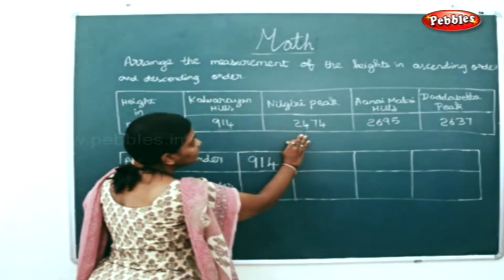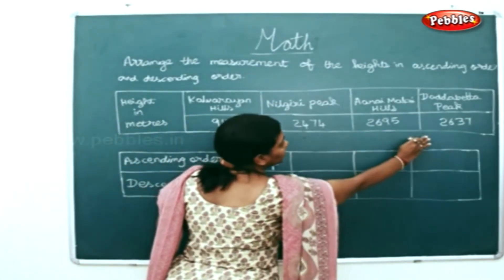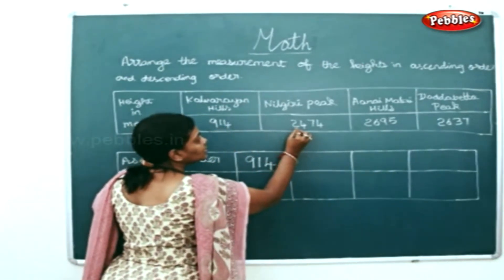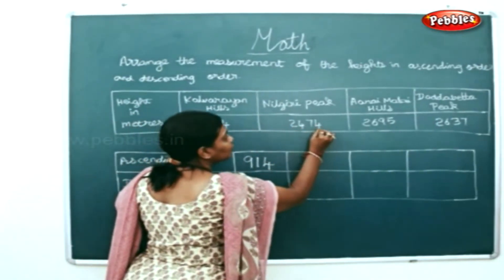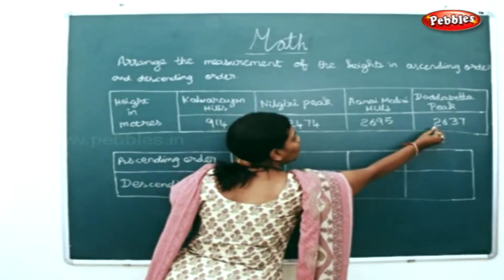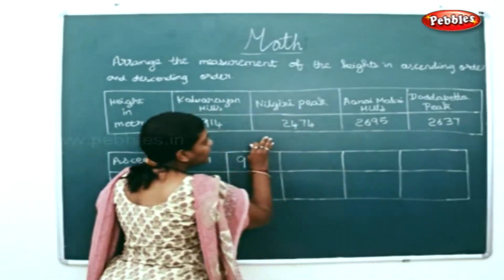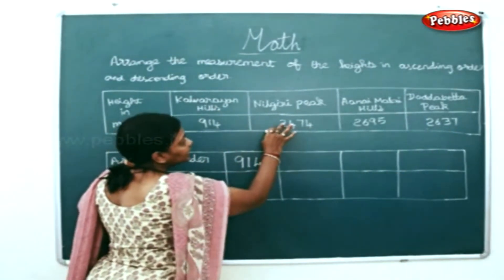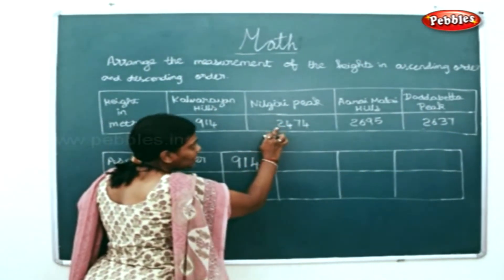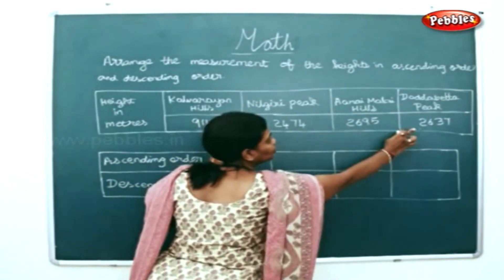Now, Nilgiri Peak, Annamalai Hills, and Dodabeta Peak — they all have 4 digits if you see. And in the thousands place, all three have got 2 in them.